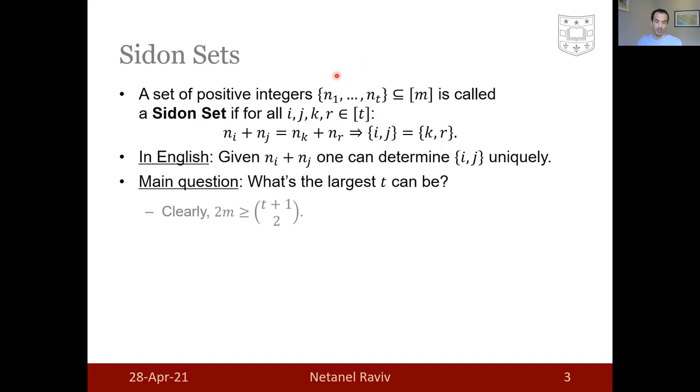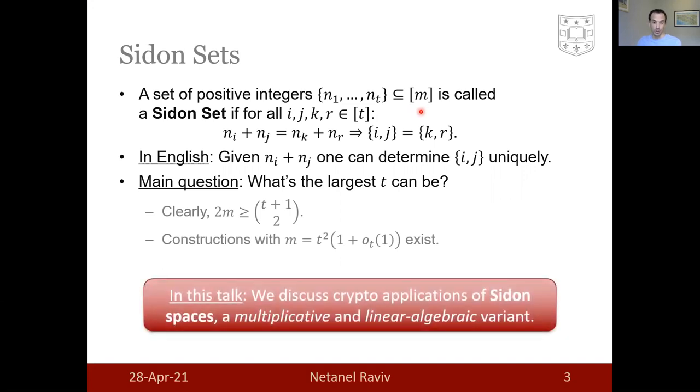Clearly, all sums fit within the range of 2M, and therefore, 2M has to be as large as the number of different sums. And respective constructions do exist way back from Paul Erdős's time. In this talk, we're going to discuss crypto applications of Sidon spaces that can be seen as a multiplicative and linear algebraic variant of Sidon sets.